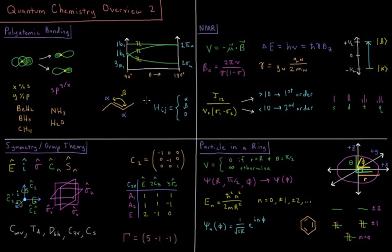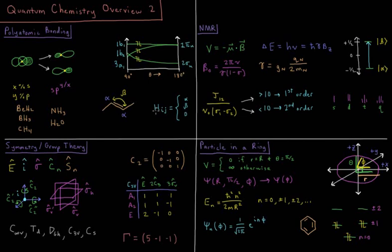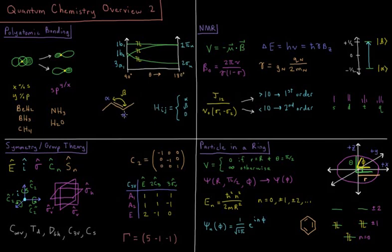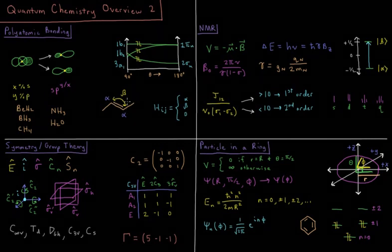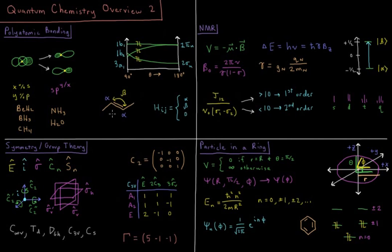Then we look at Huckel theory, which allows us to calculate the energies of particularly molecules with pi systems. We are using the linear variational method, where we define our Hamiltonian matrix elements to either be alpha, where we have a single isolated p orbital, beta, where they are adjacent to one another and interacting, or zero whenever they are separated by more than one carbon.